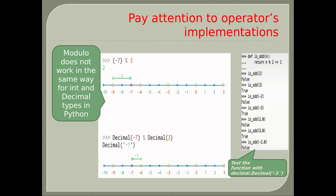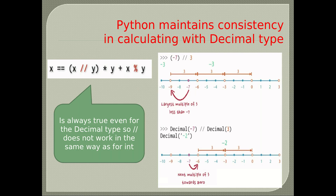We defined a function that returns true or false if a number can be divided by 2 without a remainder. You can perform tests to see which numbers are divisible by 2. Test the function with Decimal(-3). The // sign is floor division — it divides the first operand by the second. The expression x == (x // y) * y + x % y is always true even for the decimal type.